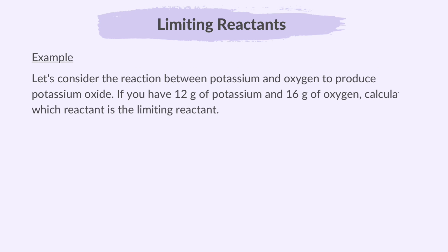Looking at an example, let's consider the reaction between potassium and oxygen to produce potassium oxide. If you have 12 grams of potassium and 16 grams of oxygen, calculate which reactant is the limiting reactant. Here's the balanced chemical equation. It shows that ideally 4 moles of potassium react with 1 mole of oxygen.